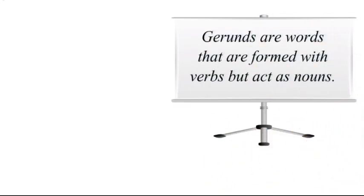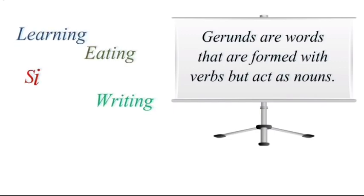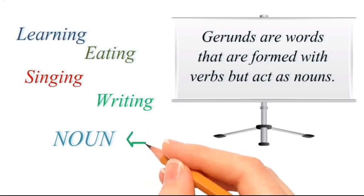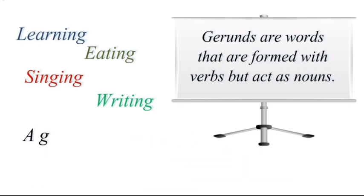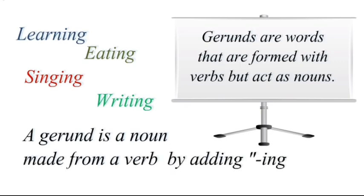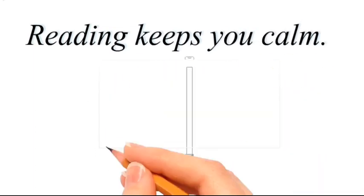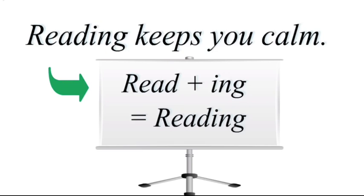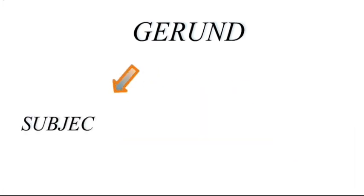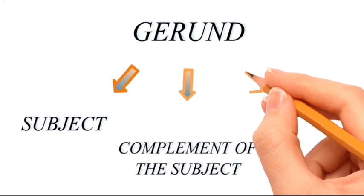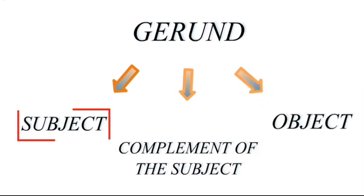Gerunds are words that are formed with verbs but act as nouns. They look like a present participle verb in form but work as a noun. Every gerund is a verb with '-ing' tagged to its end — like learning, eating, singing, writing. For example, the gerund form of 'read' is 'reading,' made by adding '-ing' to the word. You can use a gerund as a subject, as the complement of the subject, or as the object of the sentence.